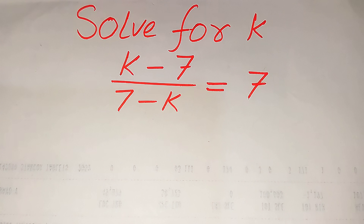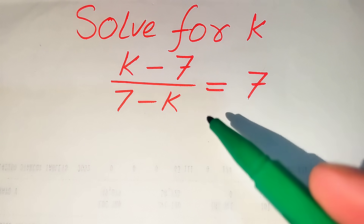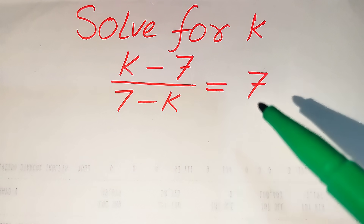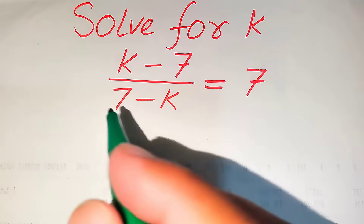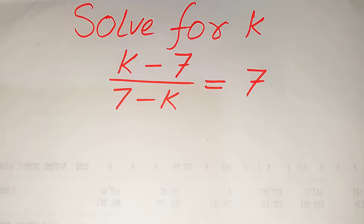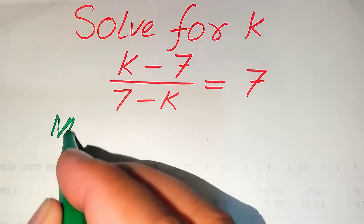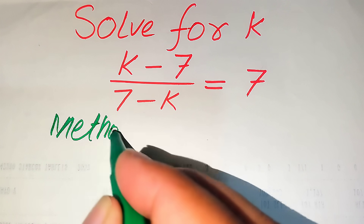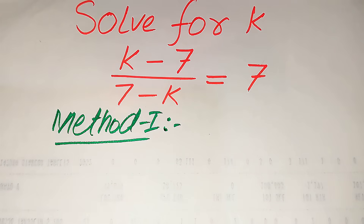Hello everyone. How to solve this problem: for the values of k, if we have (k minus 7) divided by (7 minus k) equals 7. First we find all the roots of this equation, and at the end we verify which of the roots are solutions and which are extraneous roots. We solve this problem using two methods — I hope you like both of them. If you have another method in mind, please write it in the comment section.